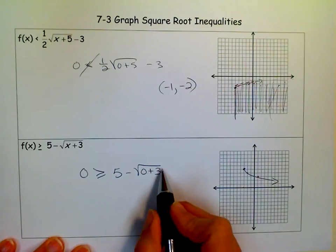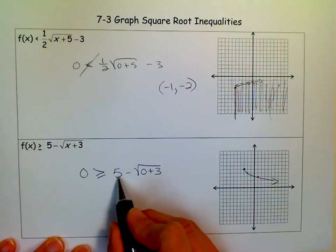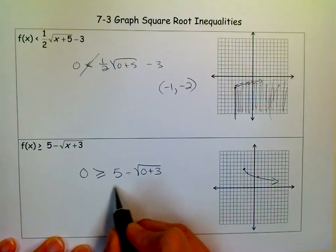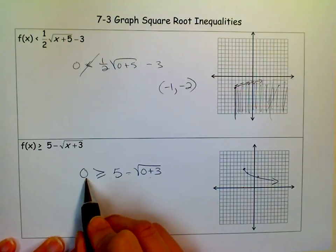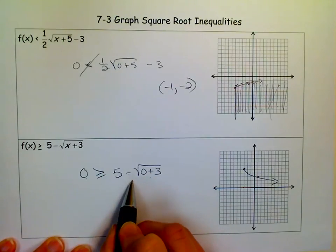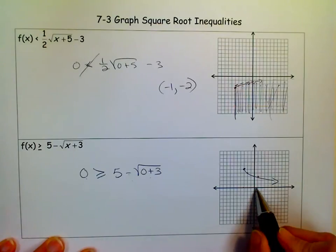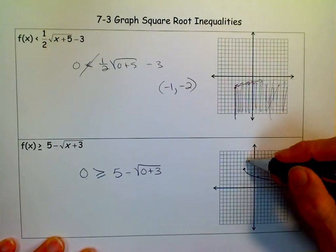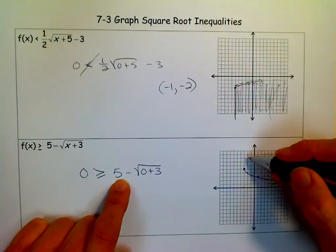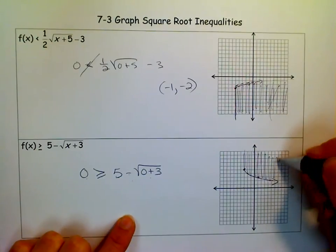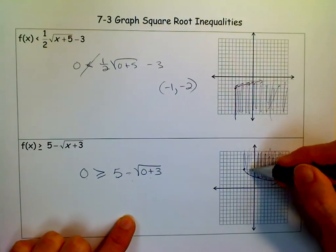So is 0 greater than or equal to 5 minus the square root of 0 plus 3? Well, the square root of 3 is a little less than 2. And 5 minus 2-ish is 3. And 0 is not bigger than 3. So 0 does not work. So I need to shade up. So it would look like that.